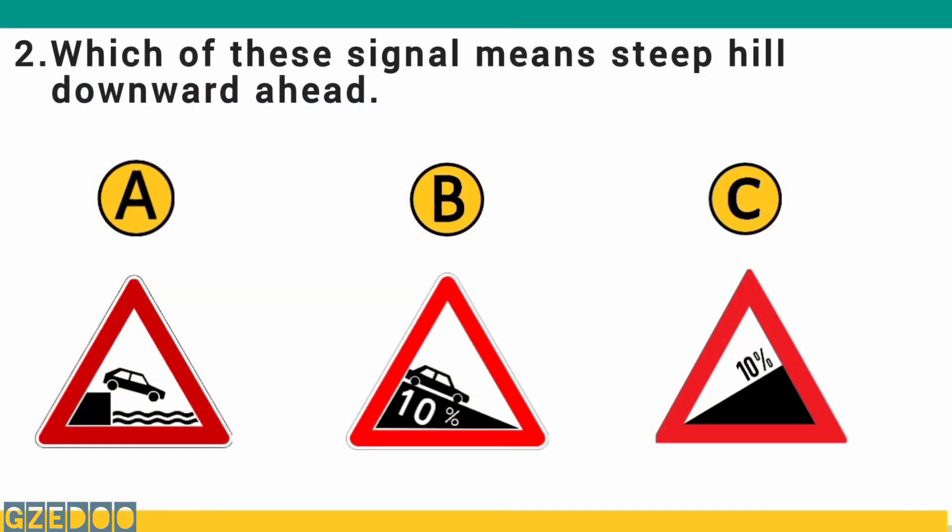Which of these signals means steep hill downward ahead? The correct answer is B: steep hill downward ahead.